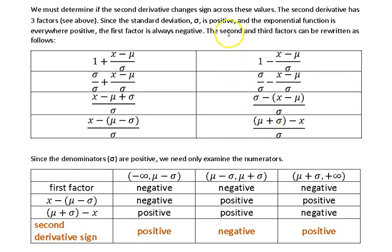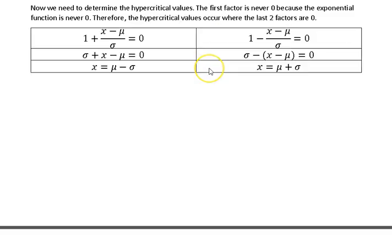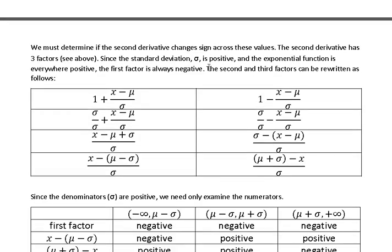In order to do that, we notice that since the standard deviation is positive and the exponential function is everywhere positive, the first factor, since it has a minus sign in it, is always negative.